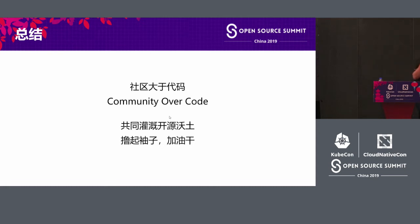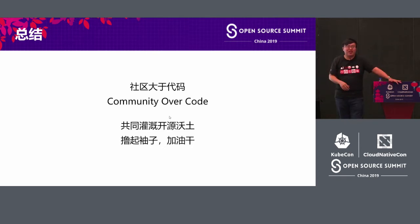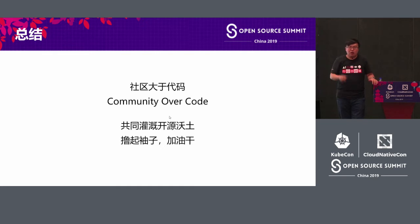We still need to wrap up this session. About the open source code — we know the community is more than the code. When people only look at open source code, they only look at the achievements of others and don't want to contribute — they only want to use others' achievements. In the past years, China really took a lot of things from everywhere. But now, gradually, China's attitude is changing — China now wants to contribute.